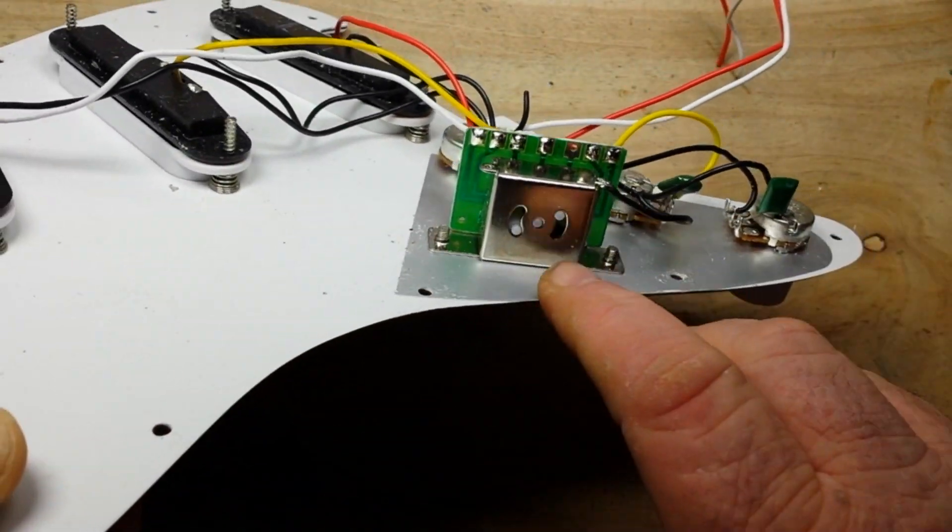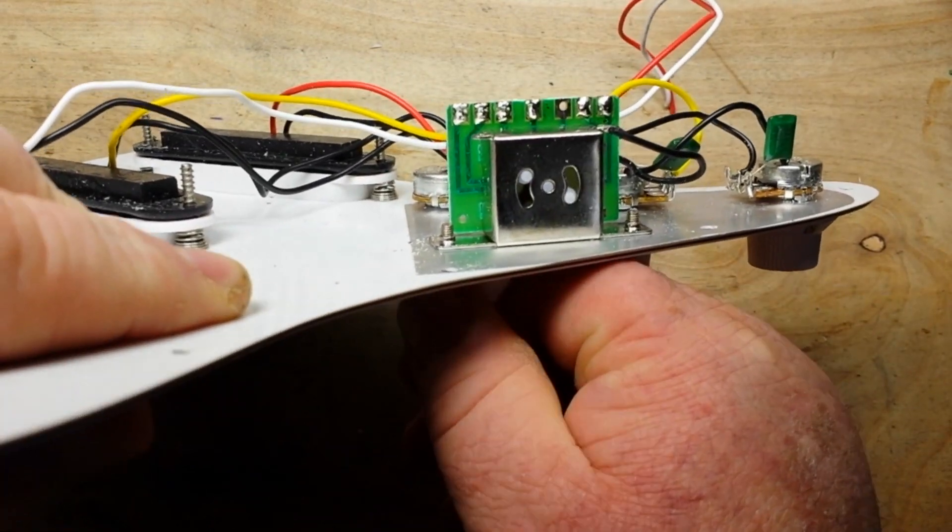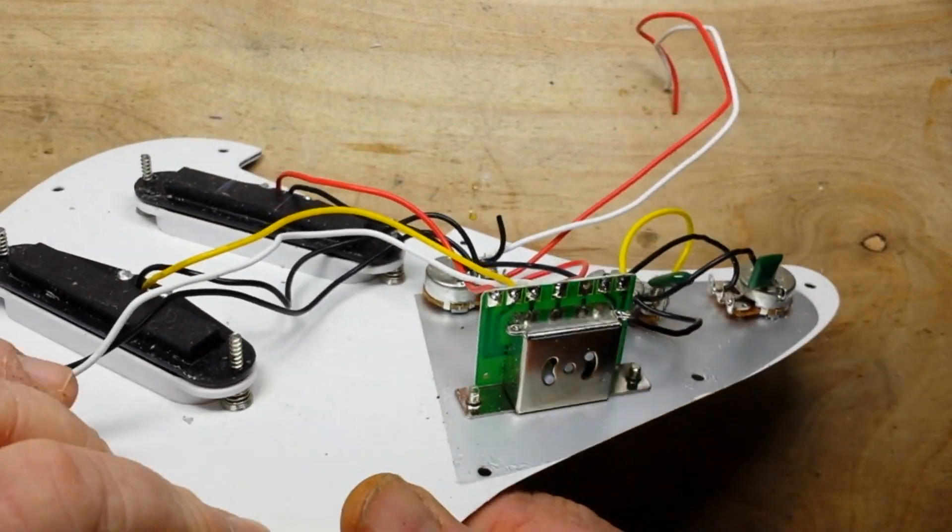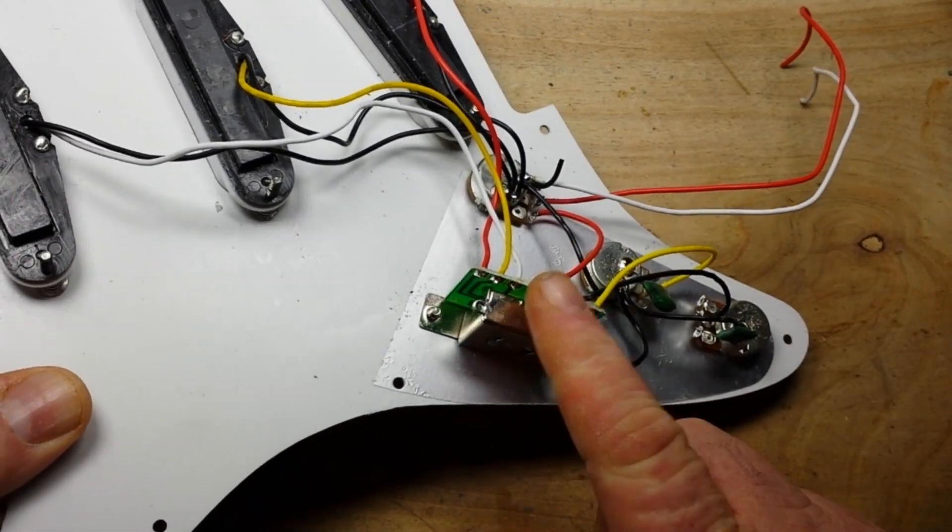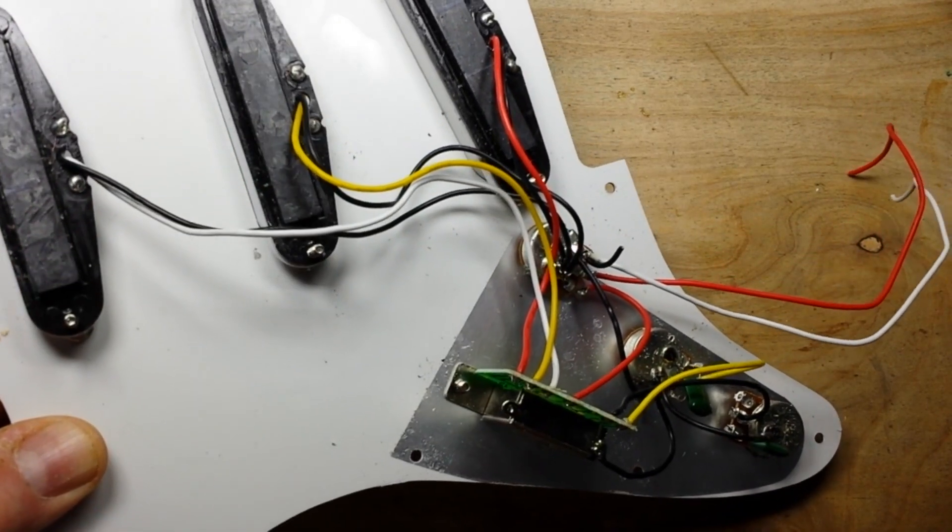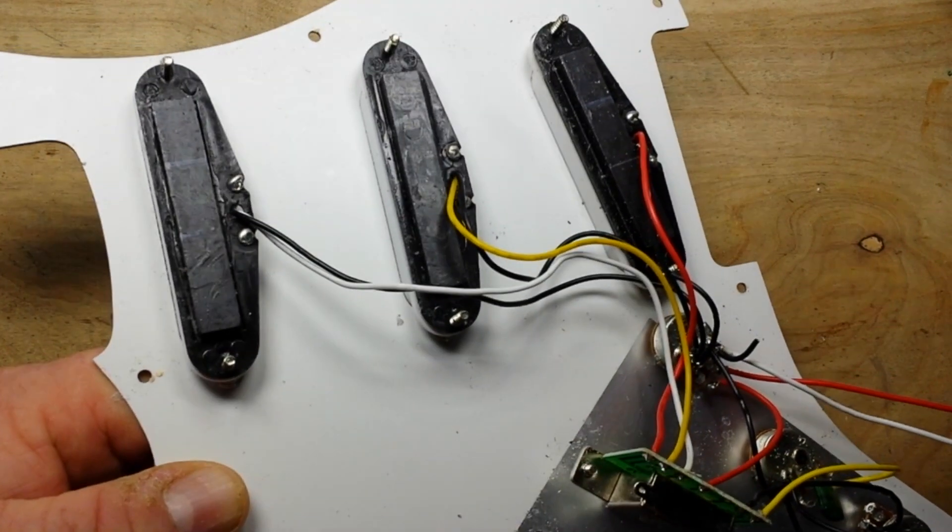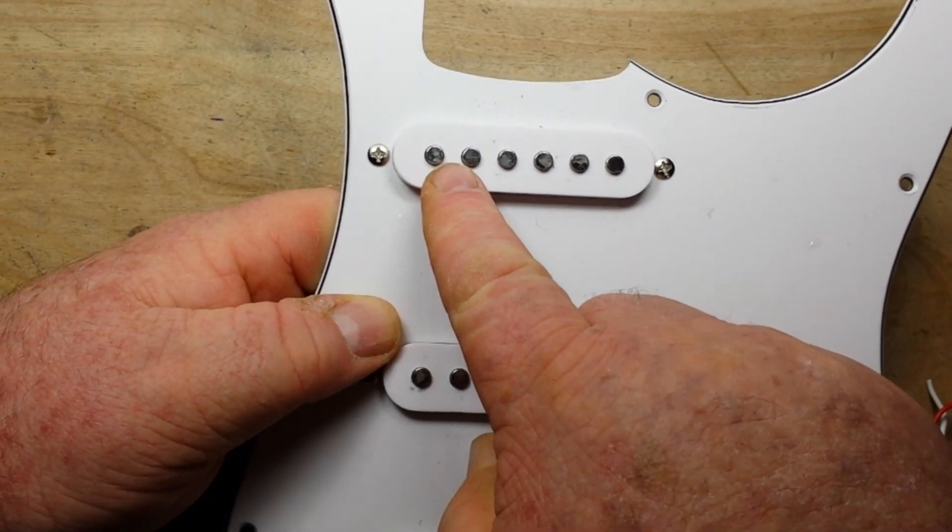And if you look at the switch here, it is just a cheapo PC board five-way selector switch. A real Strat uses a wafer switch. But what we're here to talk about is the pickups and how they work. So if we take a look at the front, these are called the pole pieces.